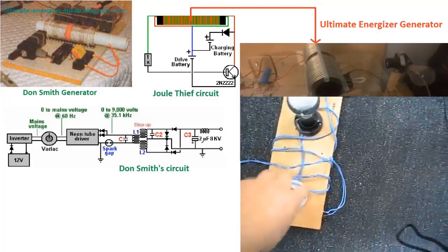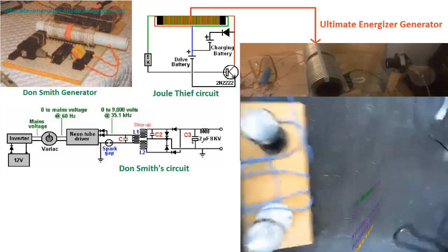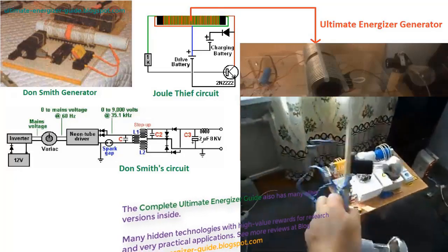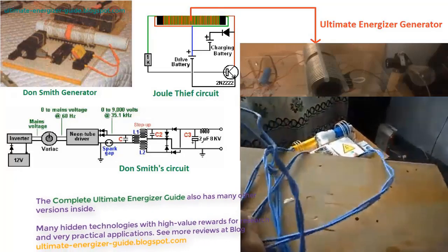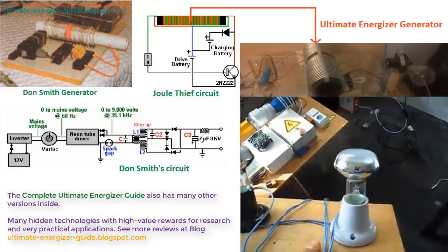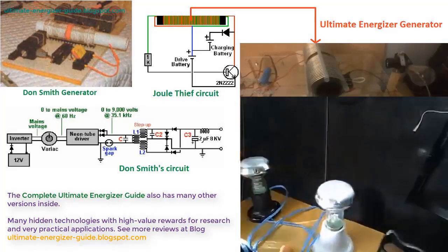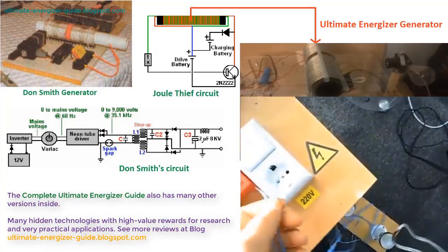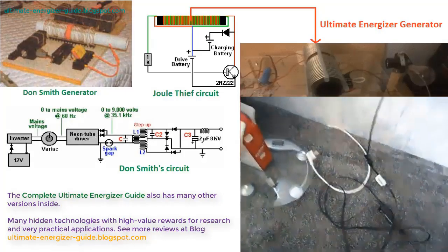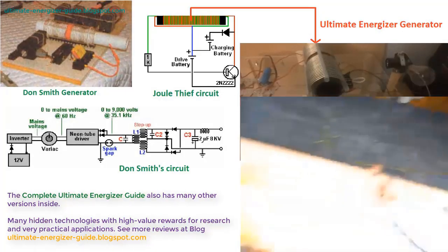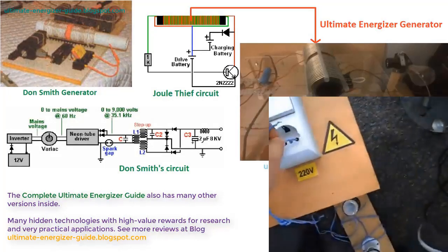The Ultimate Energizer Generator: this technology is essentially an improvement on the Joule Thief circuit and Don Smith's circuit, resulting in a unique version. The deep origin of the Ultimate Energizer Generator traces back to Nikola Tesla's innovations. Tesla's invention of the bifilar coil and regulator for dynamo electrical machines is documented in the Complete Ultimate Energizer Guide.